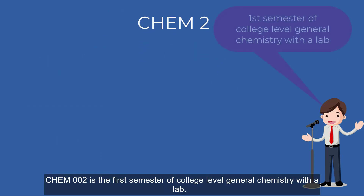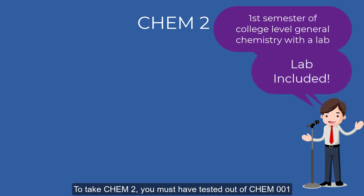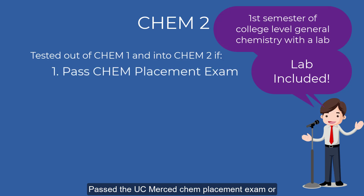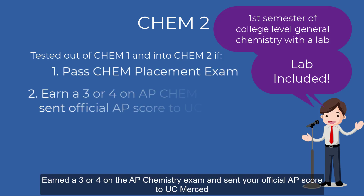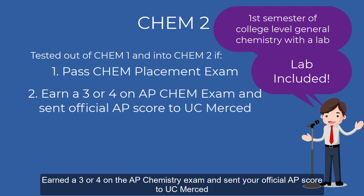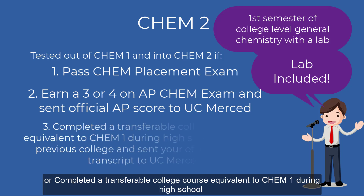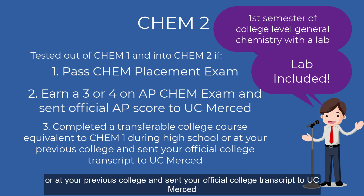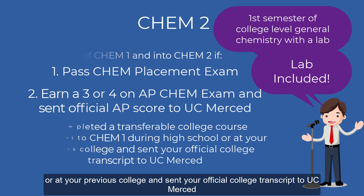Chem 2 is the first semester of college level general chemistry with the lab. To take Chem 2, you must have tested out of Chem 1. You have tested out of Chem 1 if you pass the UC Merced Chem placement exam, earn a 3 or 4 on the AP Chemistry exam and send your official AP score to UC Merced, or complete a transferable college course equivalent to Chem 1 during high school or at your previous college and send your college transcript to UC Merced.